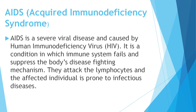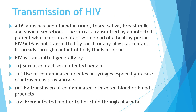AIDS — Acquired Immunodeficiency Syndrome — is a severe viral disease caused by infection of the Human Immunodeficiency Virus (HIV). It is a condition in which the person's immune system fails, suppressing the body's disease-fighting mechanism. Since these viruses attack lymphocytes and kill them, the affected individuals become more prone to infectious diseases. HIV virus has been found in urine, tears, saliva, breast milk and vaginal secretion of the affected individual. AIDS is not transmitted by touching or physical contact but is spread through contact with body fluids or blood.